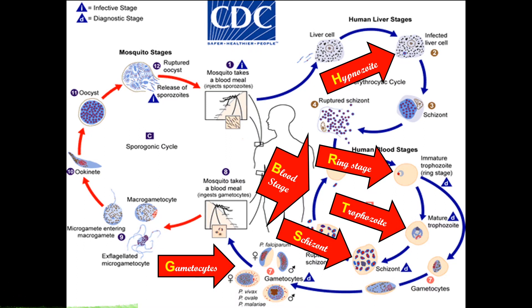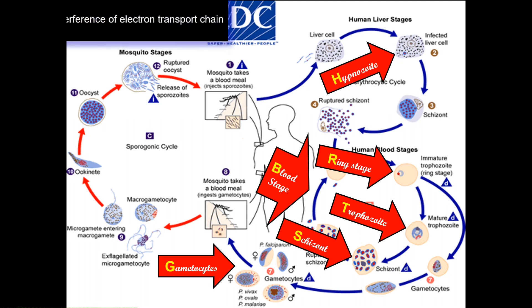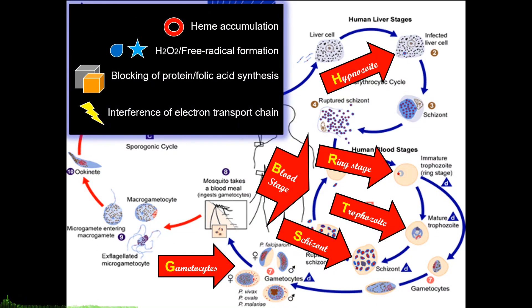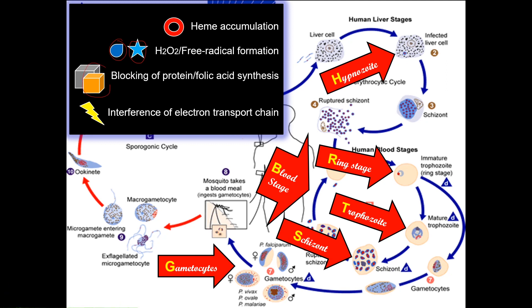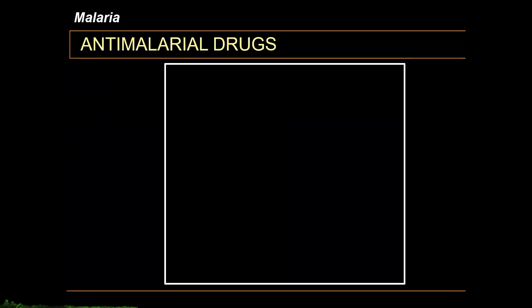Please take note that we can basically categorize all antimalarials into four distinct pharmacodynamic mechanisms of action. Your first mechanism of action is heme accumulation, which primarily targets the heme detoxification process — the conversion of heme to its non-toxic form, hemozoin. You also have hydrogen peroxide or free radical formation, blocking of protein or folic acid synthesis, and interference with the electron transport chain (ETC) of the parasite. These four mechanisms are collated into a single antimalarial drug pharmacodynamics reference.